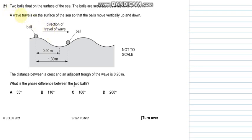It says that two balls float on the surface of the sea. The balls are separated by a distance of 1.3 meters. We need to find the phase difference between the two balls. In order to find the phase difference, we must realize that the distance between the crest and the trough is 0.9 meters.